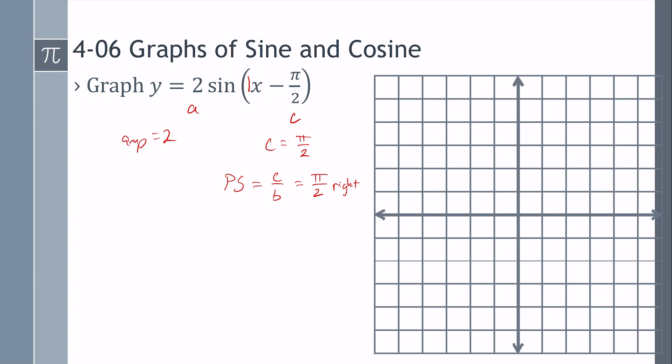All right. Our period is still 2 pi, so maybe we'll call that pi and 2 pi. So I just essentially count over 4 spaces, and that's whatever the period is. That way, I make sure that it's evenly spaced for my special points.